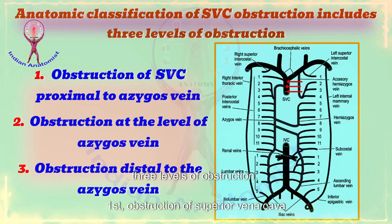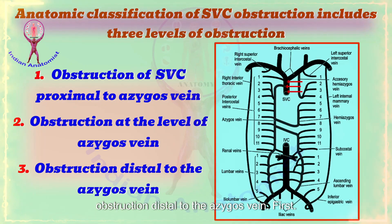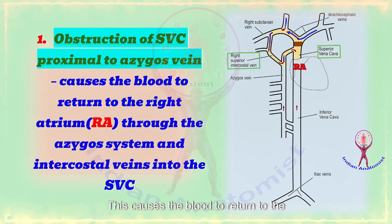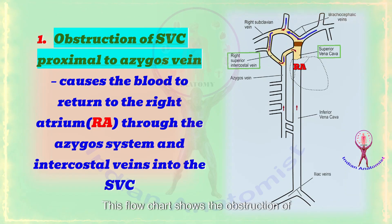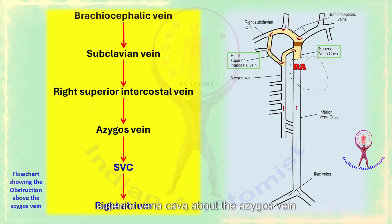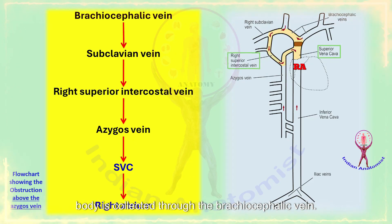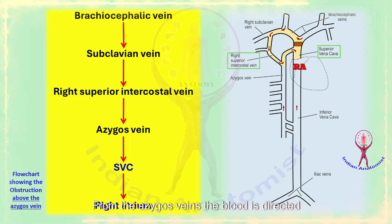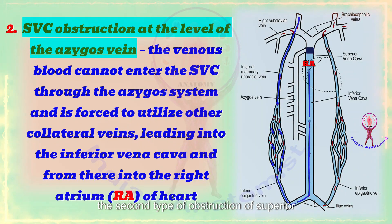The anatomical classification of superior vena cava obstruction includes three levels: first, obstruction of the superior vena cava proximal to the azygos vein; second, obstruction at the level of the azygos vein; and third, obstruction distal to the azygos vein. In the first type, obstruction proximal to the azygos vein causes blood to return to the right atrium through the azygos system and intercostal veins into the superior vena cava. The venous blood from the upper half of the body is collected through the brachiocephalic vein, then into the subclavian vein, then the right superior intercostal vein, and drained into the azygos system of veins, and from there directed to the superior vena cava and finally into the right atrium.